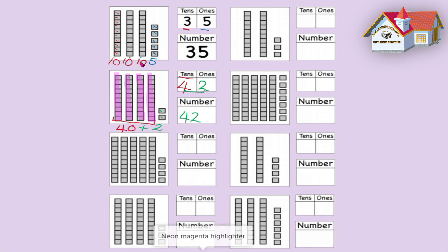Now that you know how to count in tens and you are very good at that, let's count in our tens again. Are we ready? 10, 20, 30, 40, 50. We have five tens and our answer is 50. Five tens equals 50.